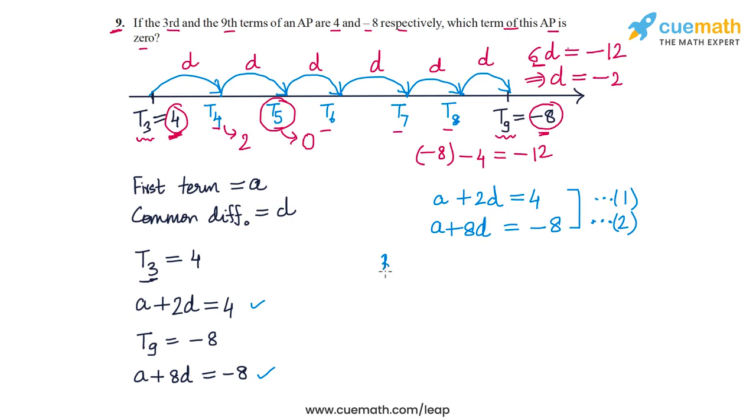We can do 2 minus 1. By 2 minus 1, what will we get? On the left side, we'll get 8D minus 2D, so that's 6D. On the right side, we'll get minus 8 minus 4, so that's minus 12. This is the exact same equation we obtained when visualizing. So 6D equals minus 12, which means D equals minus 2.